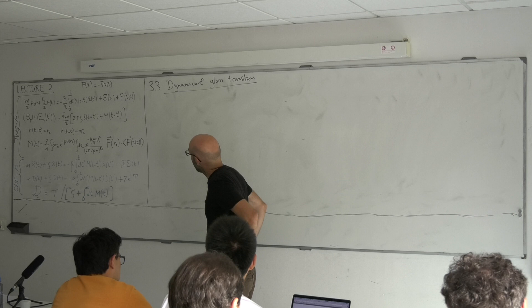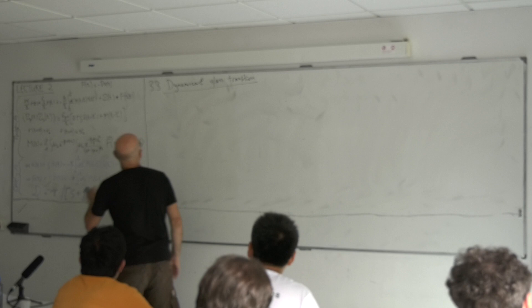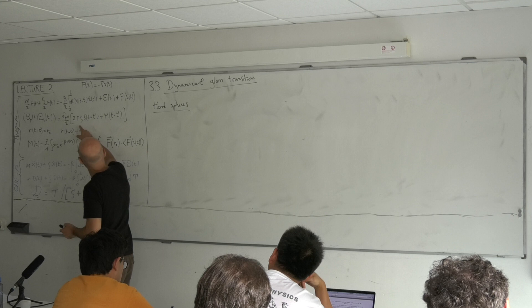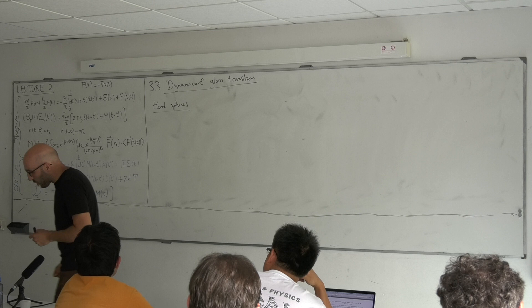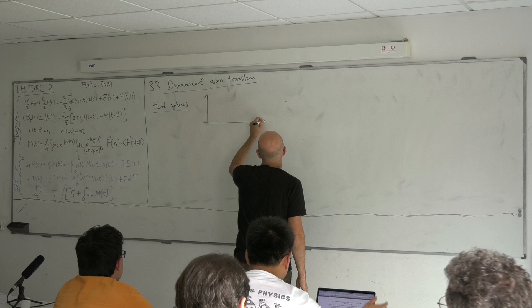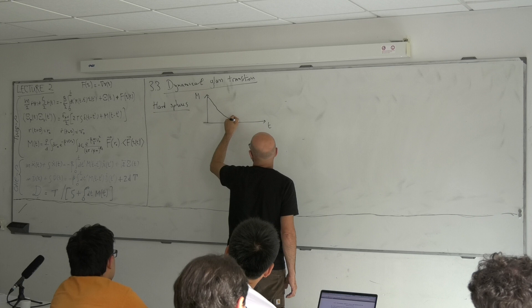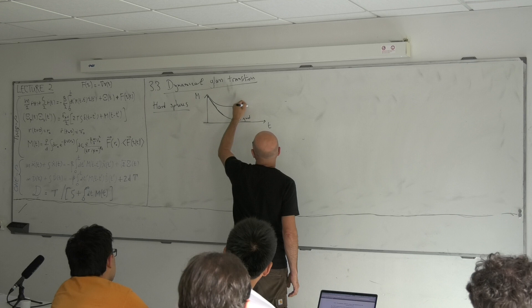You have the density and temperature as control parameters, so you can increase the density or reduce the temperature. For simplicity I will consider hard spheres, where the temperature is not important — the potential is either zero or infinity — and the temperature in the velocity can be scaled and set to one, giving the unit of time. If you solve numerically the equations and increase the density, the memory function behaves like this: in the liquid you get one behavior, and in the glass you get something with a plateau at long times at some finite value at infinity.